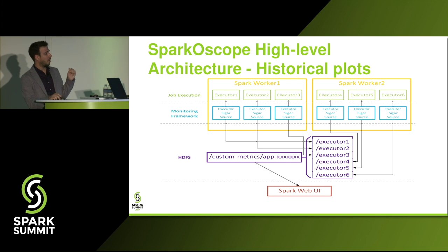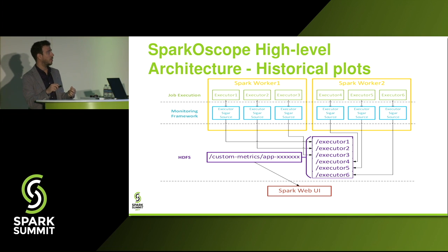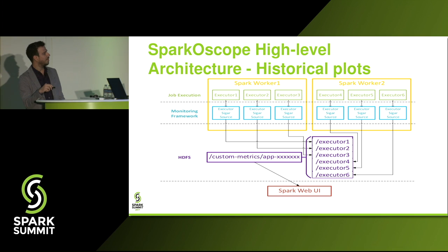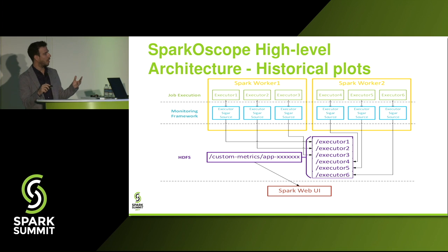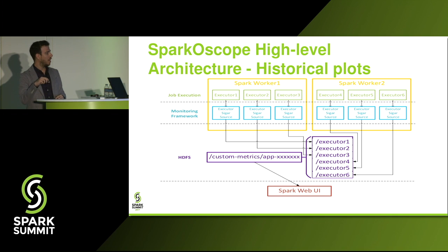Here is how we modified the architecture to support these metrics and plots on the Web UI. We have attached Cigar as a source at the executor level. Now instead of one executor writing to a local CSV file, there is one executor writing to a specific HDFS directory that the user can configure — one directory per application, and inside that one directory per executor. Once the job is finished and all metrics are collected, the modified Spark Web UI can consume all those metrics and plot them on the browser.